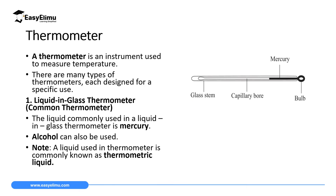So what is a thermometer? A thermometer is an instrument which is used to measure temperature, as you can see on the screen. This thermometer is used to measure the temperature of matter — in this case temperature of gases, temperature of liquids, and it can also measure temperature of solids.